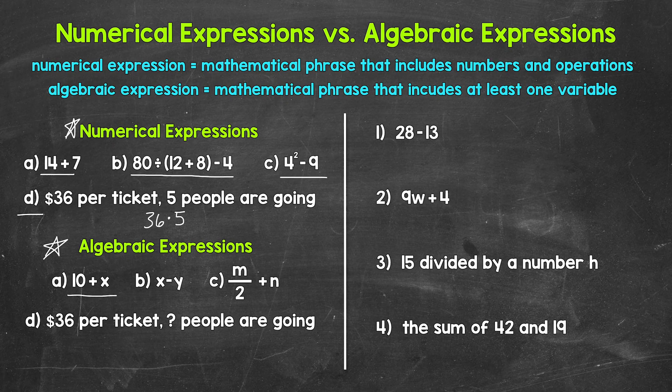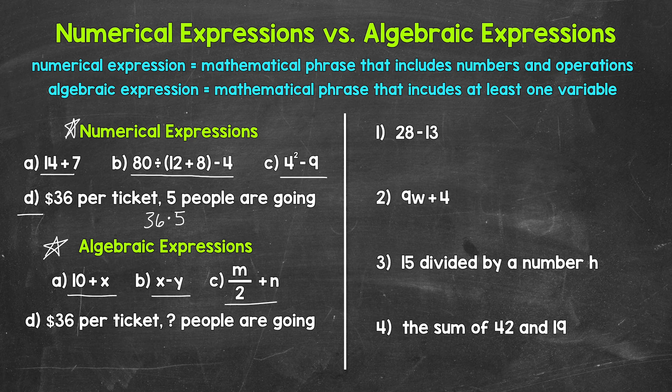10 plus x. X is the variable, the unknown. Then we have x minus y. And then m divided by 2 plus n.